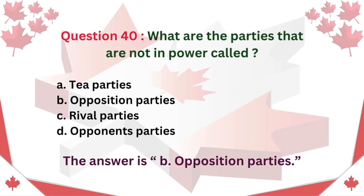Question 40: What are the parties that are not in power called? A. T parties. B. Opposition parties. C. Rival parties. D. Opponents parties. The answer is B: Opposition parties.